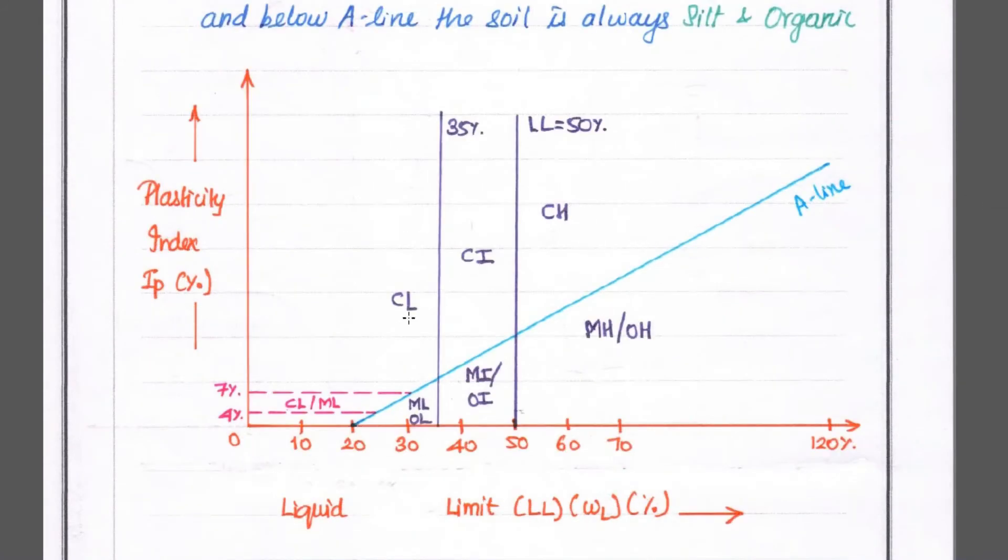Above the line we have clay. If the liquid limit is below 35%, that is called low compressible clay (CL). Between 35% to 50%, that is called intermediate clay (CI). And more than 50% of liquid limit is highly compressible clay (CH).